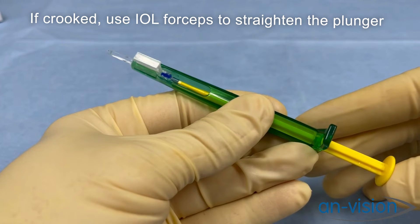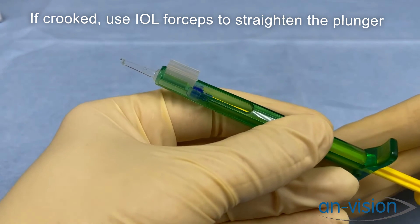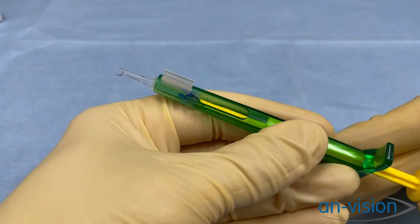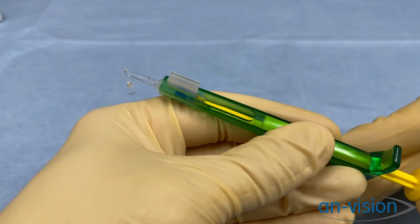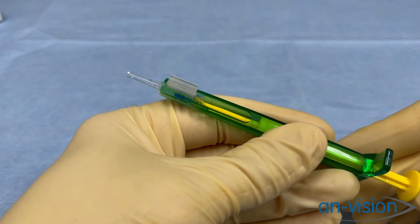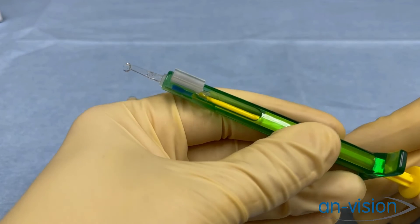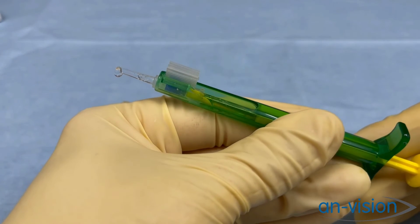Now, we are going to push that IOL into the loading tube, this front part, until it is about halfway into that tube. As you can see, you can see it entering.